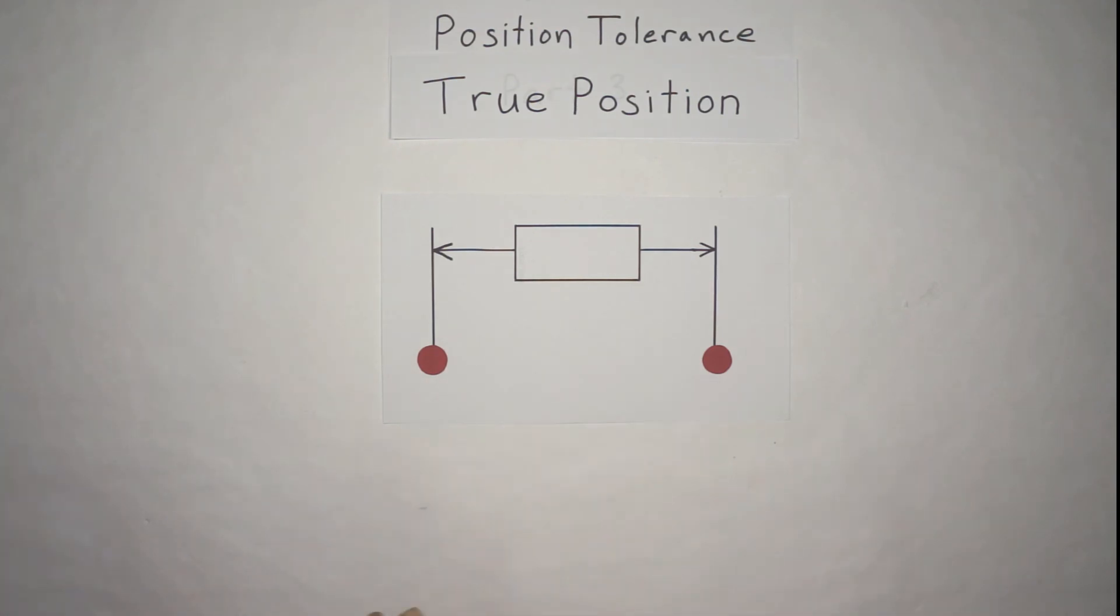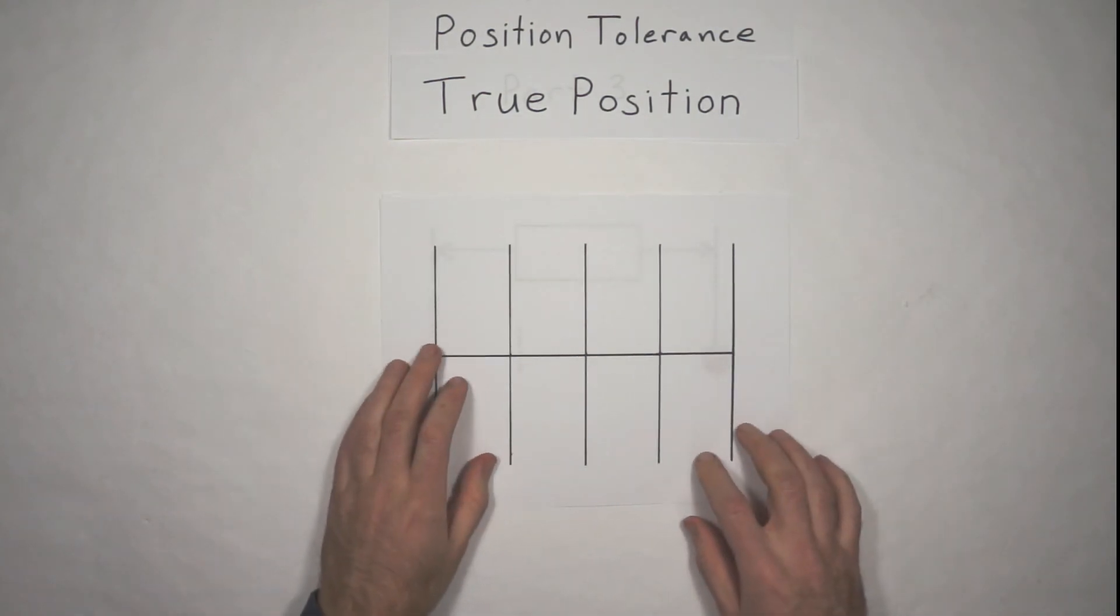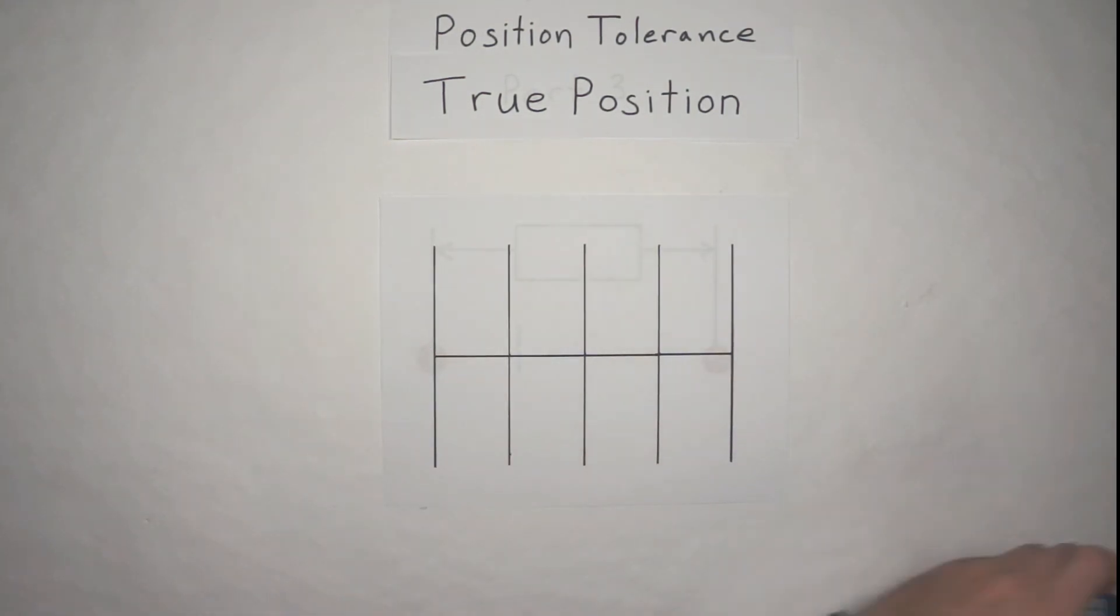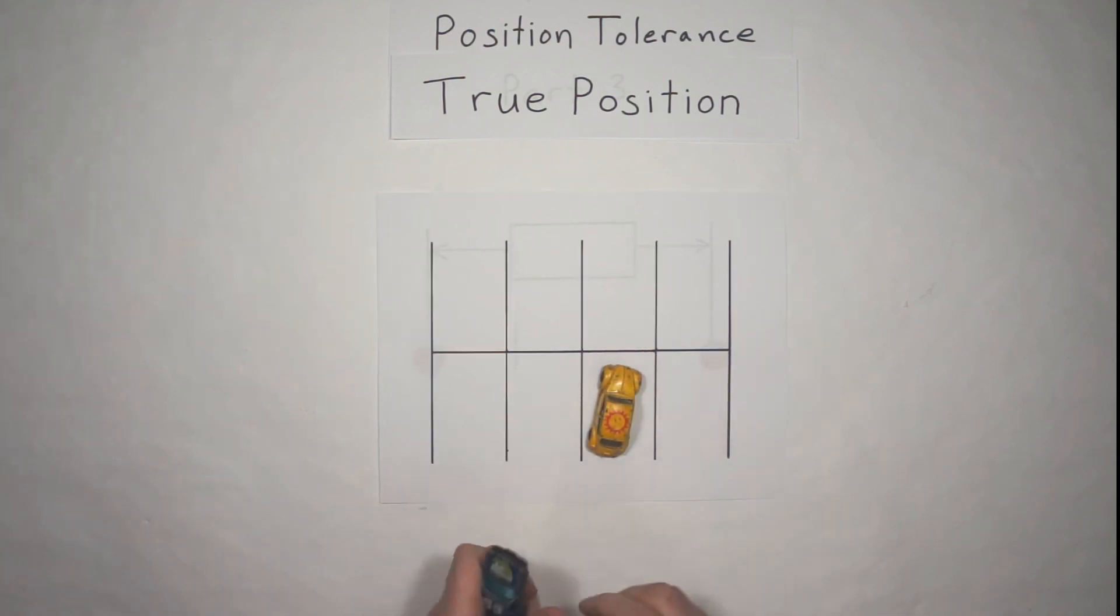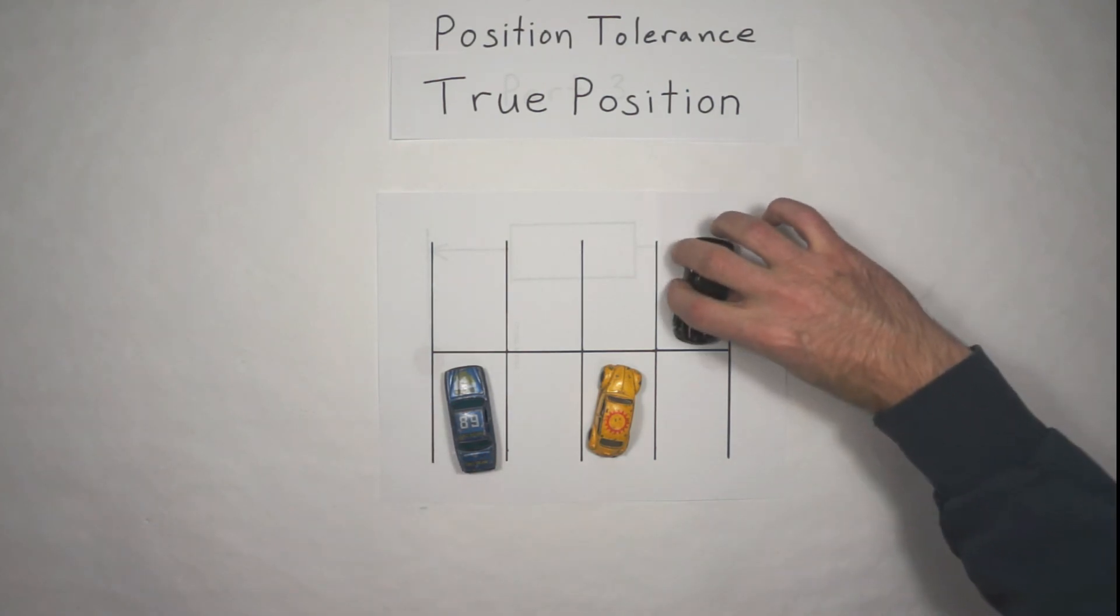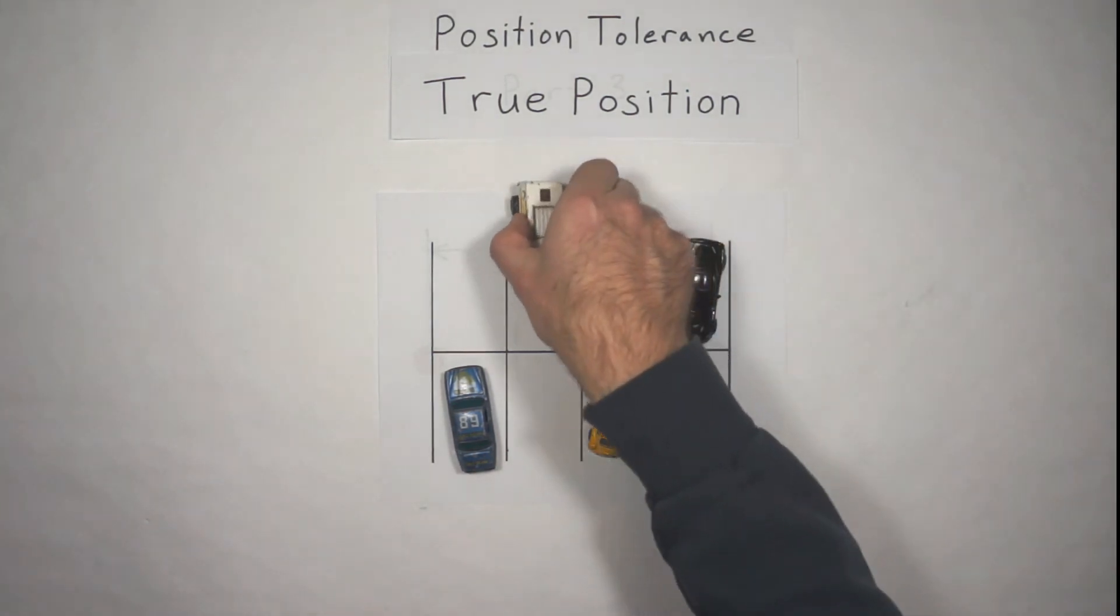So I hope that makes sense. I brought in this example of the cars in the parking lot thinking, all right, we've got those parking lot lines that are straight and true, but they're not really features. They're just there on the pavement, and it's up to us to park our features within those lines.